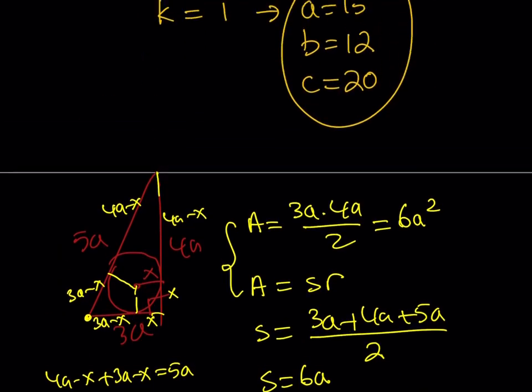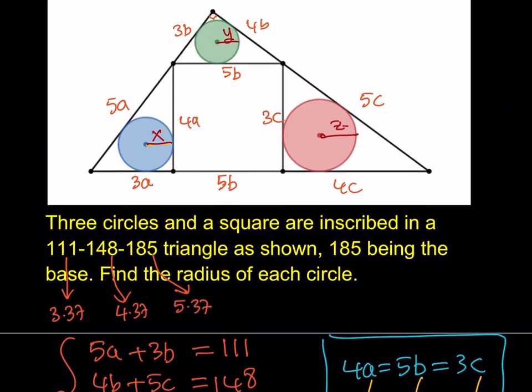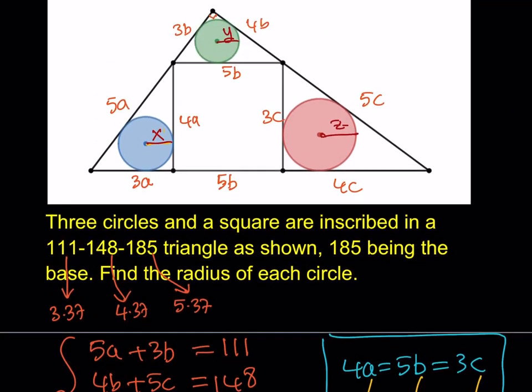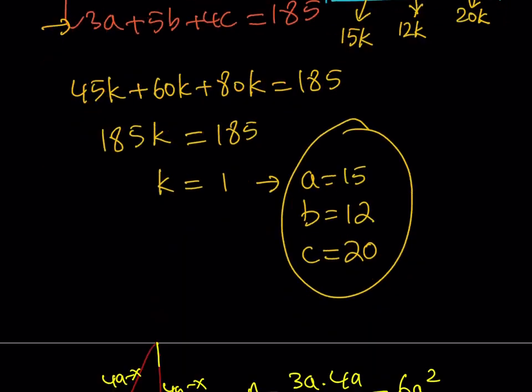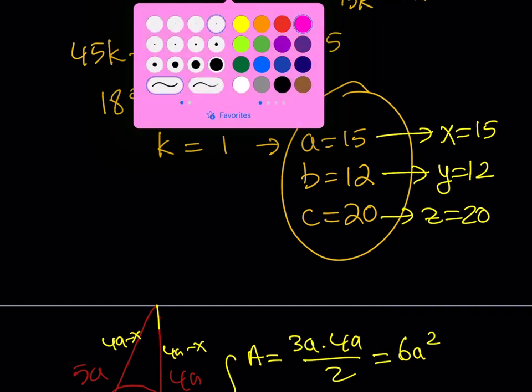I just wanted to use the area formula because it's kind of cool. Anyway, so the radii for each one of these is going to be equal to, x is going to be a, y is going to be b, and z is going to be c. These values are actually the values of the radii. So this means x equals 15, y equals 12, and z equals 20. And we are done.